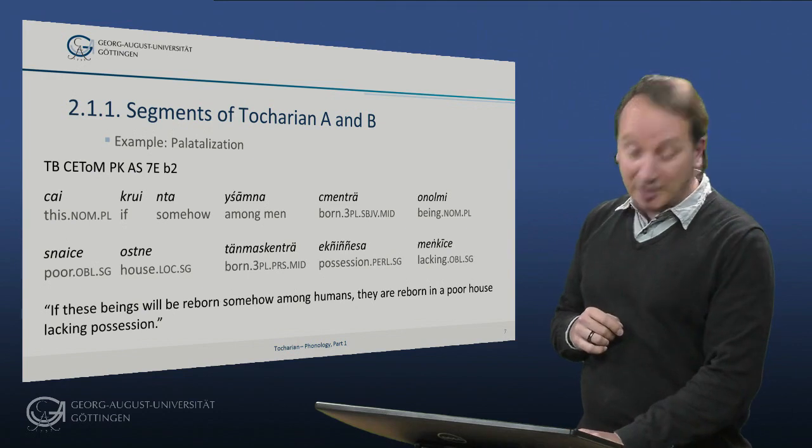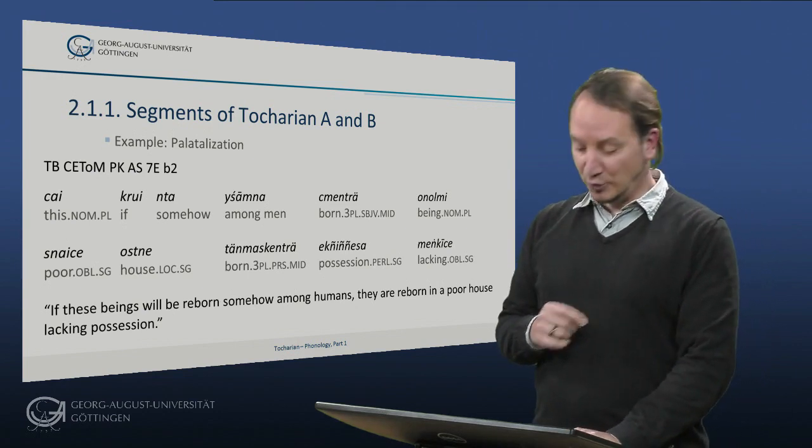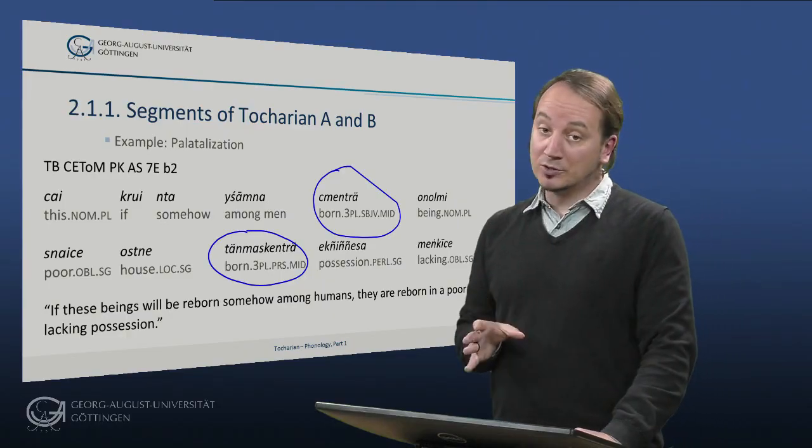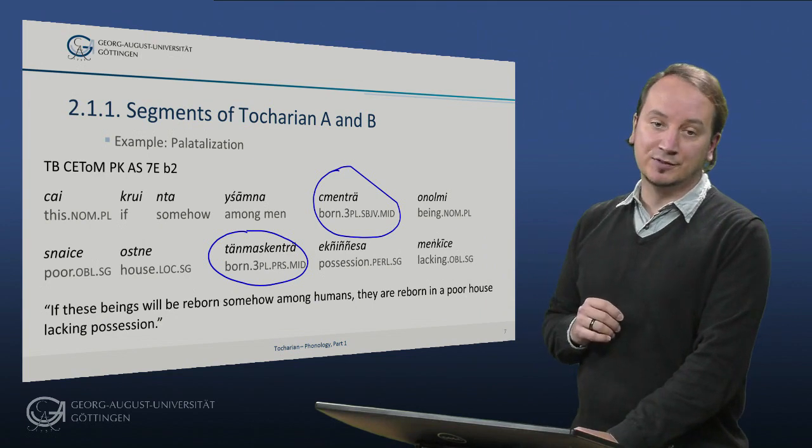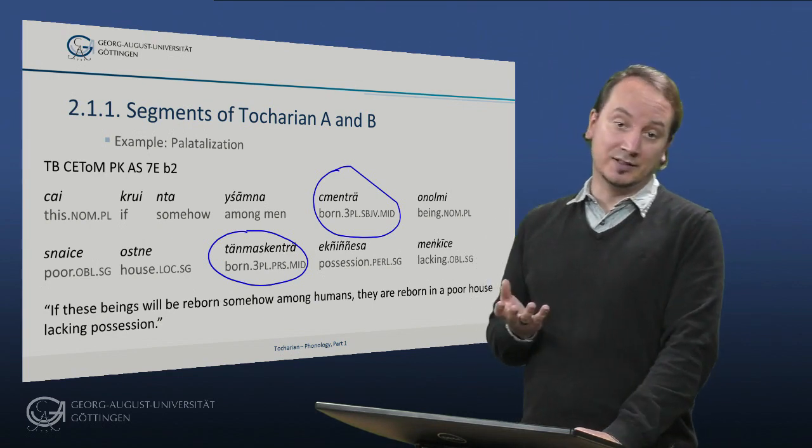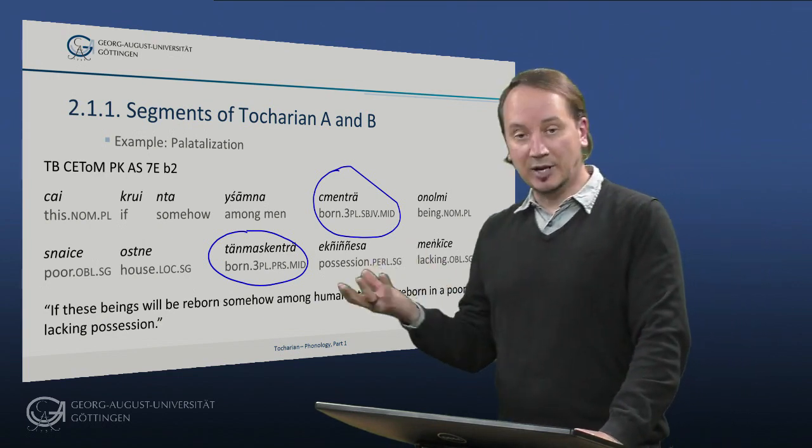For our purposes here, we are interested in the verbs, namely this here, Tocharian B, Schmentr, they will be reborn, third plural subjunctive middle of the root Toym, be born, and the other verb Toymmaskentr, which is they are reborn from the same root Toym to be born. So both belong to the same root Toym with different morphological features in the subjunctive and in the present, and the feature of the subjunctive of this root is palatalization of the underlying T to the palatal CH.